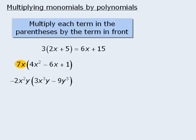Here we'll take 7x and first multiply it by 4x squared to get 28x cubed. Then we'll multiply 7x by negative 6x to get negative 42x squared, which we will write as minus 42x squared. And finally, when we multiply 7x by positive 1, we get positive 7x, which we can write as plus 7x.